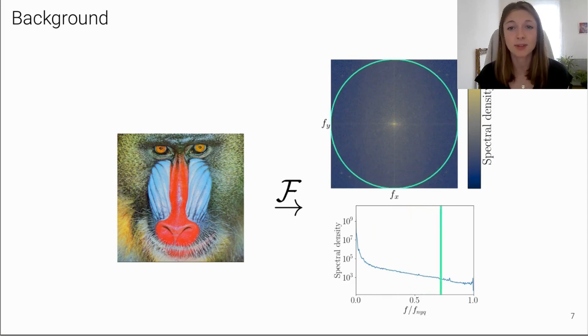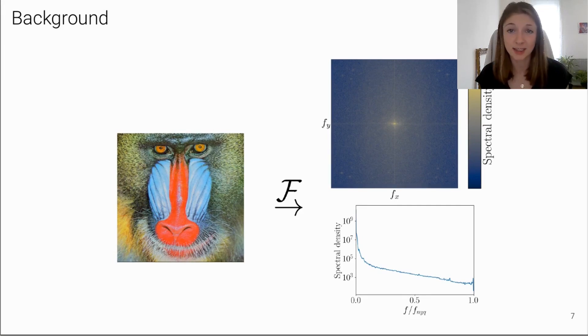We can further reduce the spectral information to a 1D plot by computing the azimuthal average over the 2D spectrum. Thereby, we average the magnitudes of frequencies with the same absolute value, regardless of their direction. This azimuthal integration of the spectrum is also referred to as the reduced spectrum.